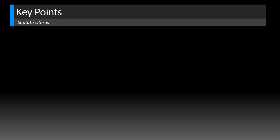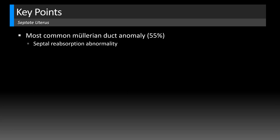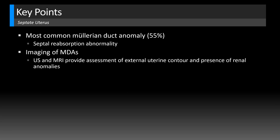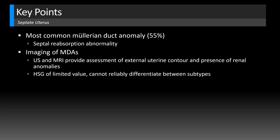Key points for septate uterus: it is the most common Müllerian duct anomaly at about 55%, compared to bicornuate uterus, which represents only 10%. It is an abnormality of septal reabsorption. The Müllerian ducts are paired embryologic structures that undergo fusion and resorption in utero, giving rise to the uterus, fallopian tubes, cervix, and upper two-thirds of the vagina — but not the ovaries or the lower vagina. Ultrasound is usually the initial study, ideally using 3D ultrasound, with MRI reserved for complex or indeterminate cases. Both modalities allow assessment of the external uterine contour and evaluation for associated renal anomalies. HSG is of limited value as it cannot reliably differentiate subtypes — it only shows the endometrial cavity, not the external fundal contour.